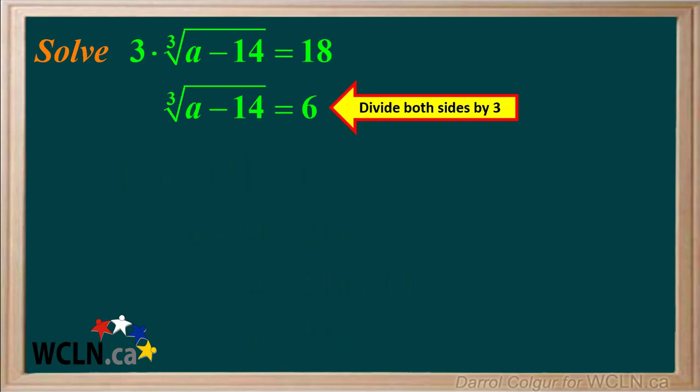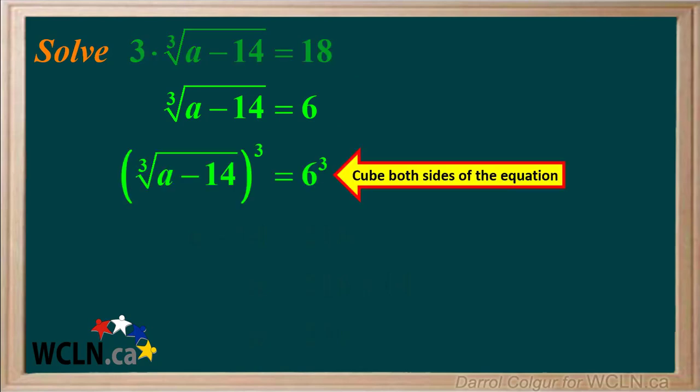So next we cube both sides of the equation. Cubing both sides of the equation gives us this. Next we work out both of these cubes.